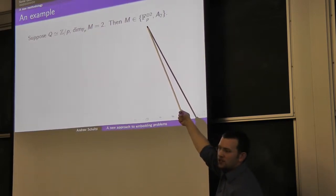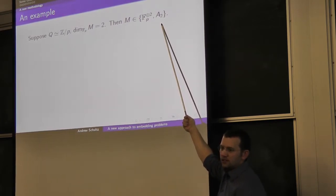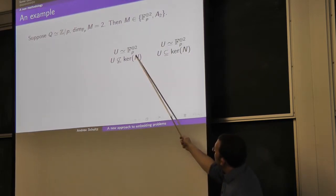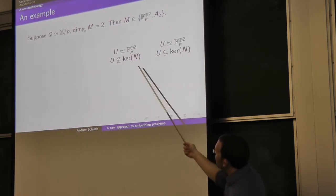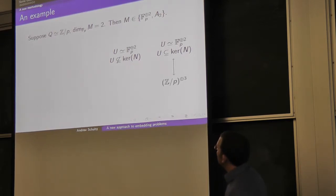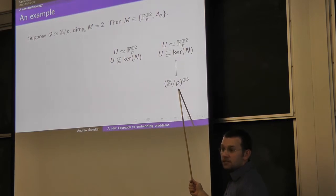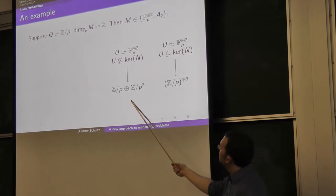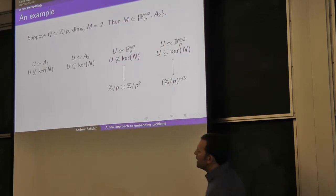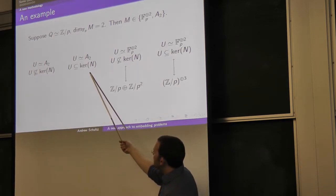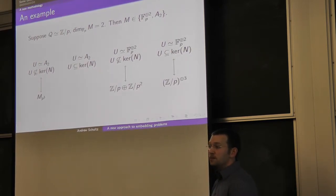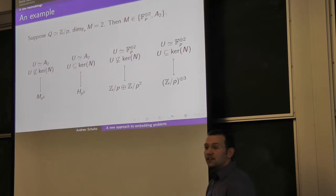If your module is isomorphic to the trivial thing of dimension 2, then either it sits inside the kernel of the map N or it doesn't. When it does, the extension you get is exactly a threefold sum of Zp; when it doesn't, you get Zp plus Z mod p squared. The other option is U could be A2. Either it sits in the kernel — giving the Heisenberg group of order p cubed and exponent p — or it doesn't, giving the non-abelian group of order p cubed of exponent p squared.